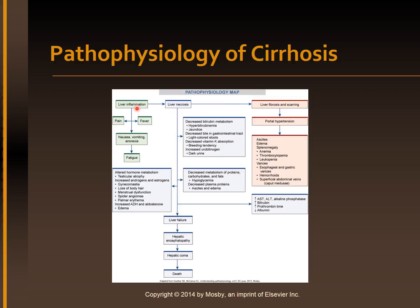Liver inflammation can cause pain, fever, nausea, vomiting, anorexia, and fatigue. Liver necrosis can lead to decreased bilirubin metabolism, decreased bile in the GI tract, decreased vitamin K absorption, and increased urobilinogen.